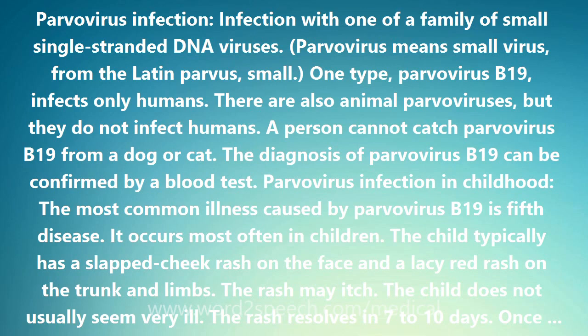Parvovirus Arthritis: Adults with Parvovirus commonly have joint pains and swelling. This form of arthritis usually resolves within weeks, but about 10% of patients can have a more prolonged arthritis that does mimic rheumatoid arthritis. The rheumatoid factor blood test is usually negative, but can be positive. Treatment involves medications that reduce inflammation in the joints.